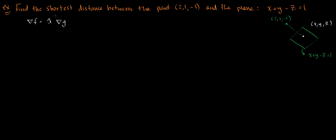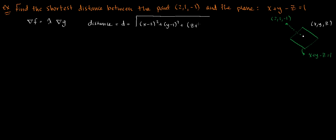The function I'm trying to minimize is the distance between the point and the plane. So the formula for distance is d equals the square root of (x minus 2) squared plus (y minus 1) squared plus (z plus 1) squared. We can treat this as our function, but the square root is going to make it hard to compute the partial derivatives. So instead, we square both sides: d squared equals (x minus 2) squared plus (y minus 1) squared plus (z plus 1) squared.